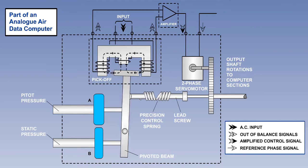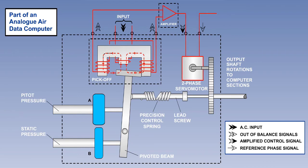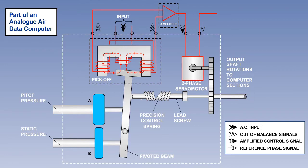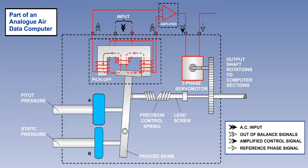Movement of the pressure capsules makes the I-bar move sideways, changing its position relative to the E-bar. This causes an out-of-balance signal to be sent to the amplifier, and then the servo motor, which turns the shaft. This system has the transducers in the computer. A transducer is any device which converts a physical measurement, in this case, pressure, into an electrical signal.